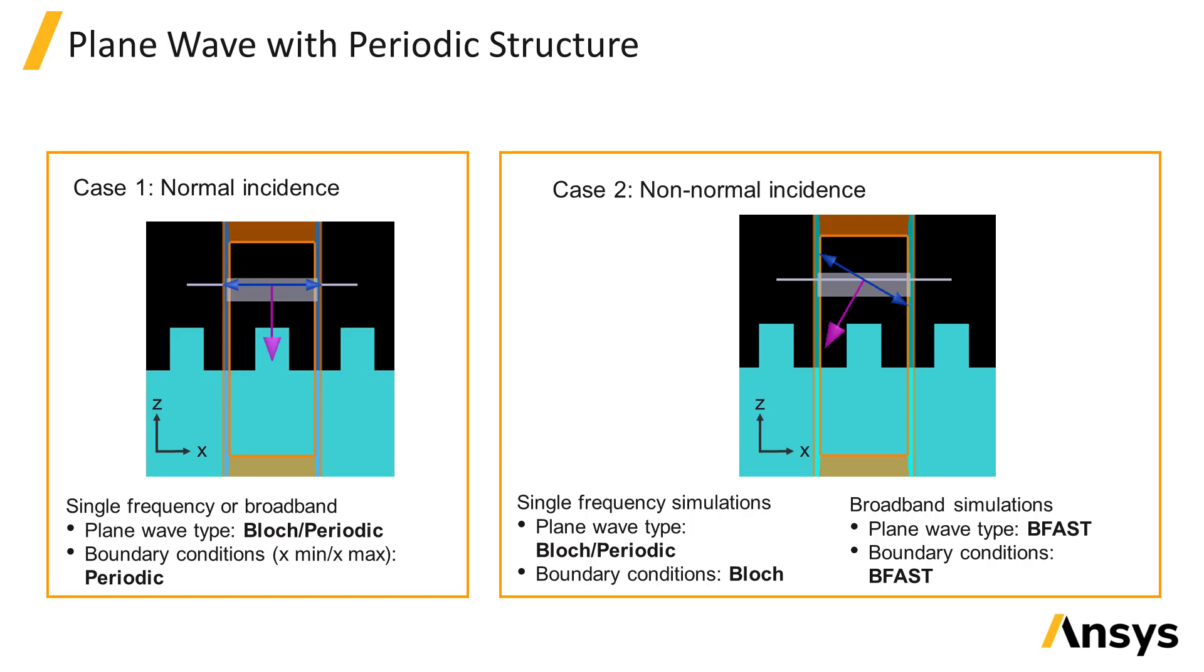For the broadband case, the BFAST type source is recommended. When using the BFAST source, BFAST boundary conditions will automatically be used at the sides of the source.